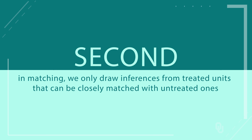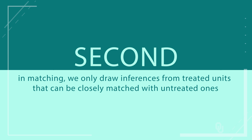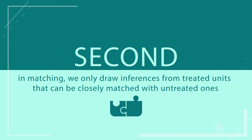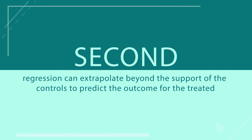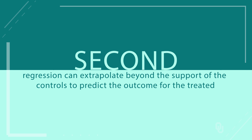Second, as noted, in matching we only draw inferences from treated units that could be closely matched with untreated ones. That is, we restrict the analysis to the region of common support. This doesn't happen with regression. Regression can extrapolate beyond the support of the controls to predict the outcome for the treated.